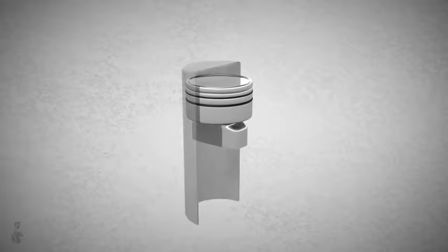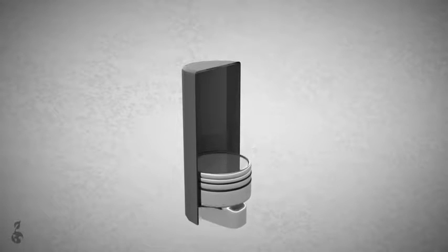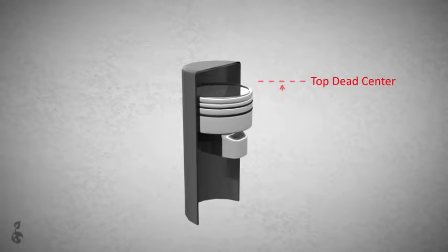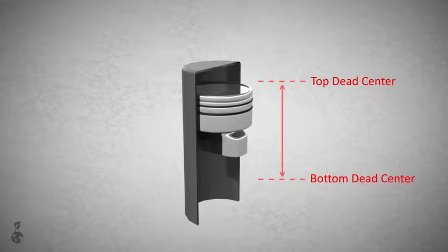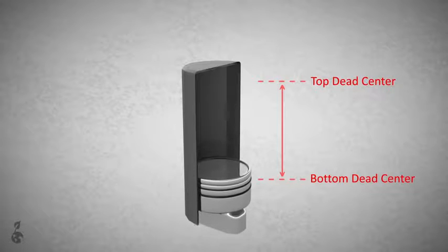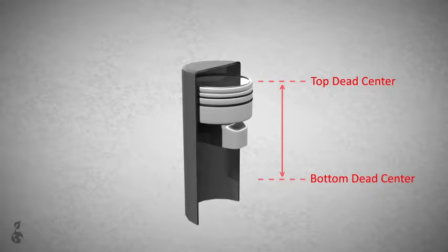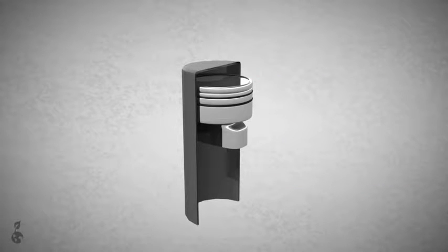This engine is composed of a piston that moves up and down in a cylinder. The highest point the piston can reach is called top dead center. The lowest point it can reach is called bottom dead center. The volume between both points is called engine displacement.